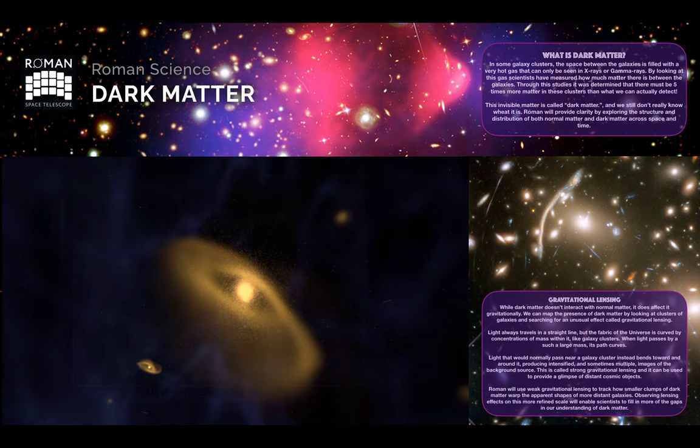While dark matter does not directly interact with normal matter it can affect it gravitationally. We can map the presence of dark matter by looking at galaxy clusters and searching for an effect called gravitational lensing. When light passes by a large dark matter mass it can be bent and the light can be potentially magnified causing an observer to see multiple images of the same galaxies with different brightnesses all curved around the dark matter center.